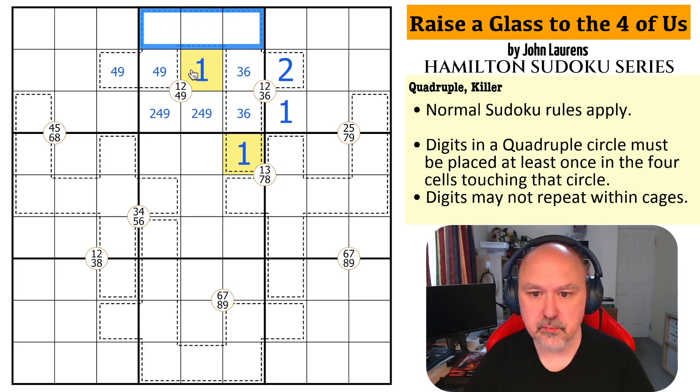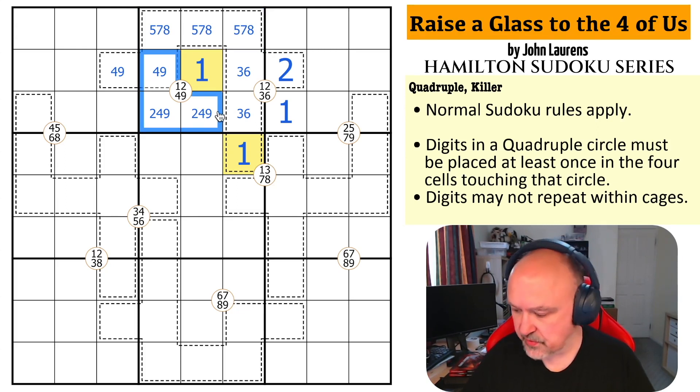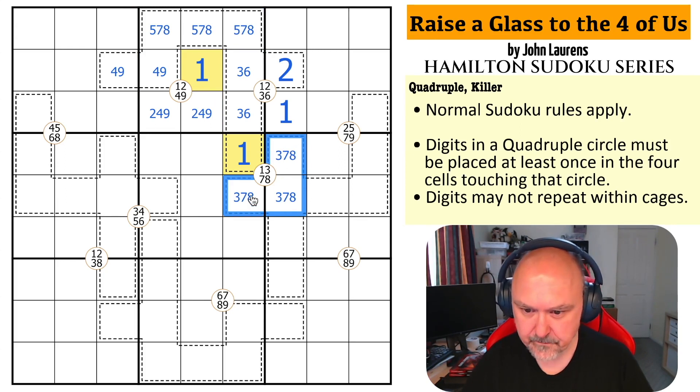Now this is a triple. Because 1, 2, 3, 4, 5, 6, 7, 8, 9. That's very smooth. And we've also got 3, 7, 8 in here. So 7 is already in this cage. So, it's in one of those two.